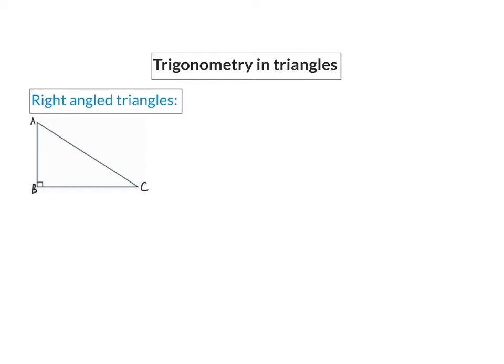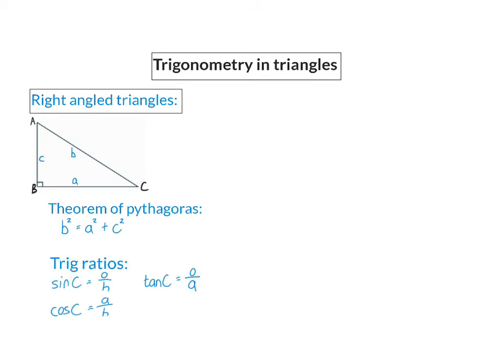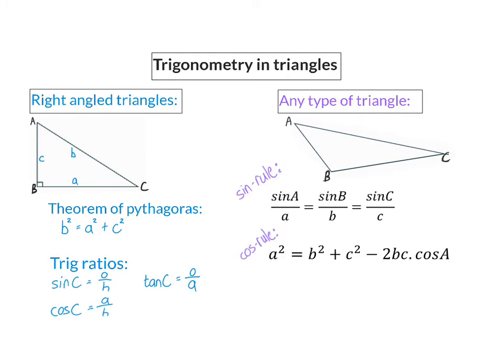In right-angled triangles, we know that we can use the theorem of Pythagoras and we can use our basic trig ratios. Then in grade 11, we had a look at the trig rules that we can use in any type of triangle, and that is our sin, cos, and area rule.